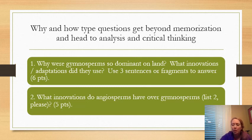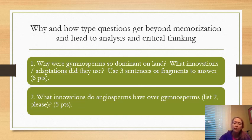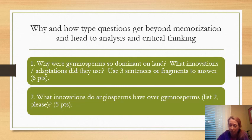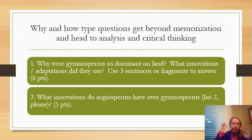Here are a couple of examples. I teach biology, but this applies to other subjects too. So: 'Why were gymnosperms so dominant on land? What innovations and adaptations did they use?' There's a why question paired with a what question to give more clarity. The answer requires three sentences or fragments — for biology, language and punctuation don't matter, so fragments are fine. I just want the ideas from the student.